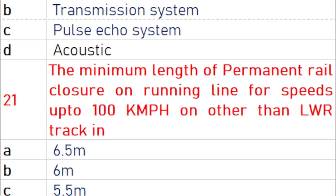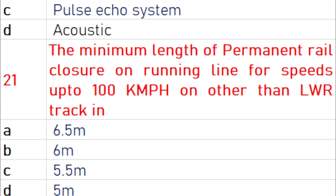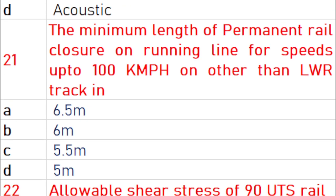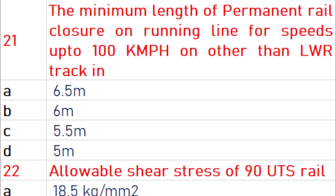The minimum length of permanent rail closure on a running line for speed up to 100 kmph on track other than LWR track is 5.5 m.